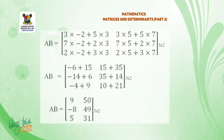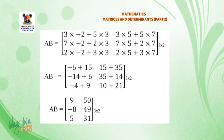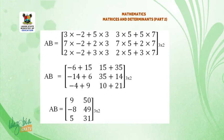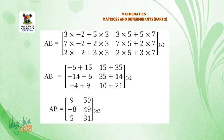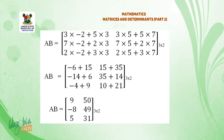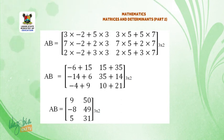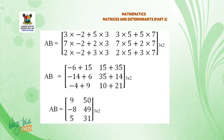AB equals the matrix: (3×(minus 2) + 5×3), (3×5 + 5×7), (7×5 + 2×5), (7×5 + 2×7), (2×(minus 2) + 3×3), (2×5 + 3×7).